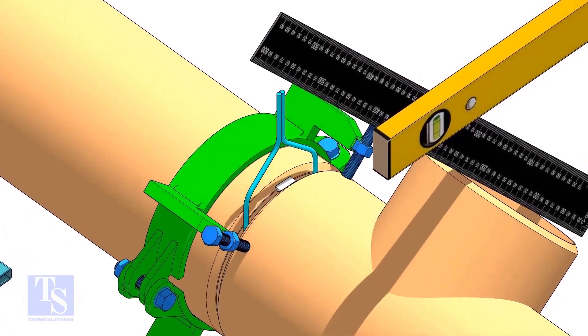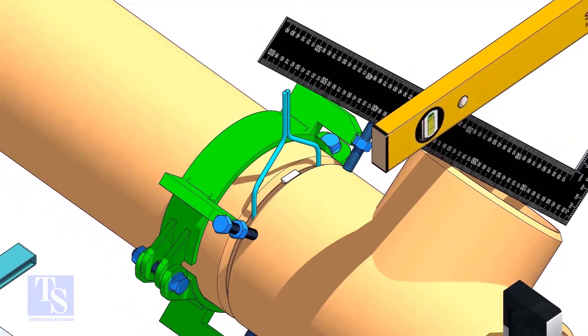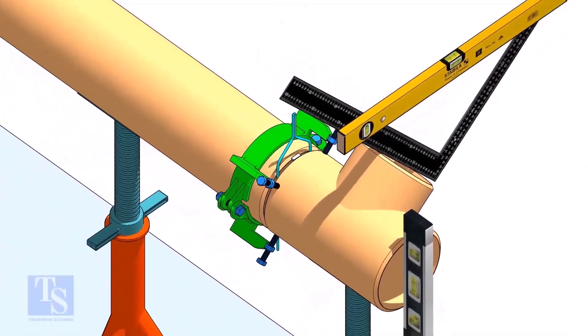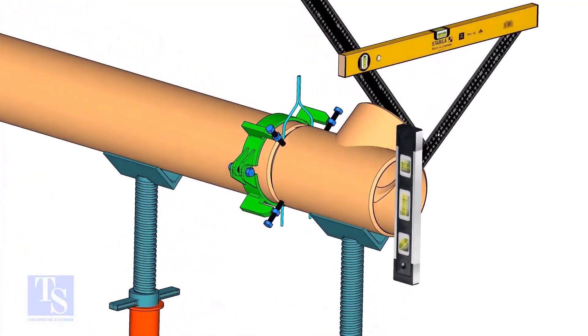Tack weld on the top side of the joint. Check the end level of the T. Tack weld at the bottom side.